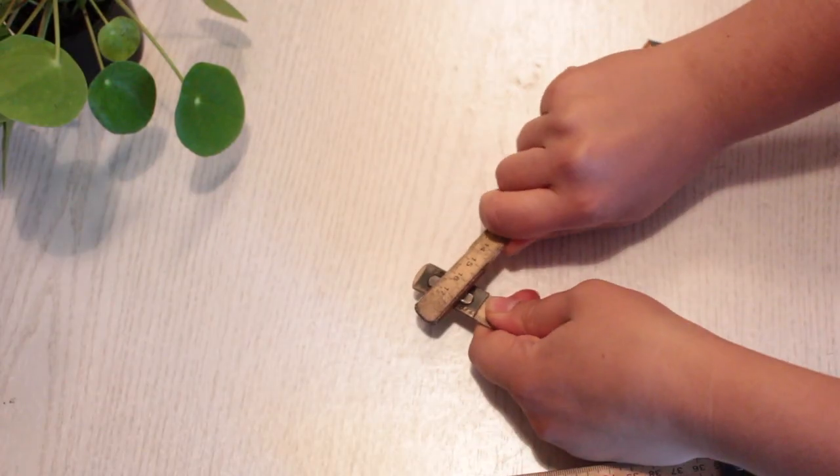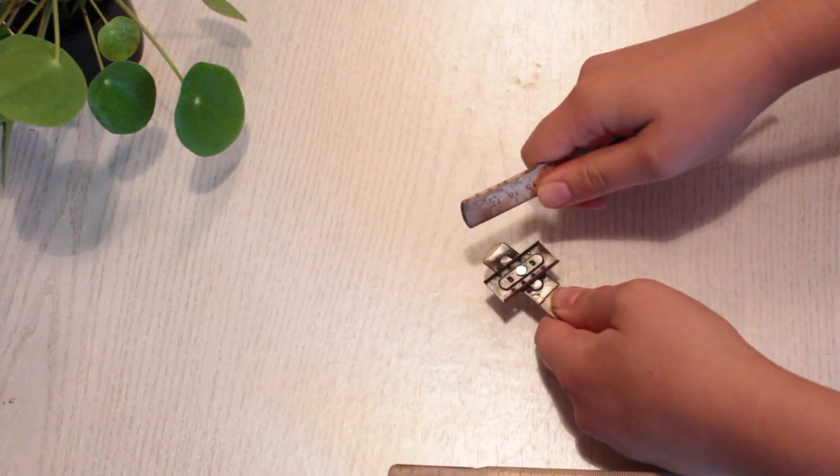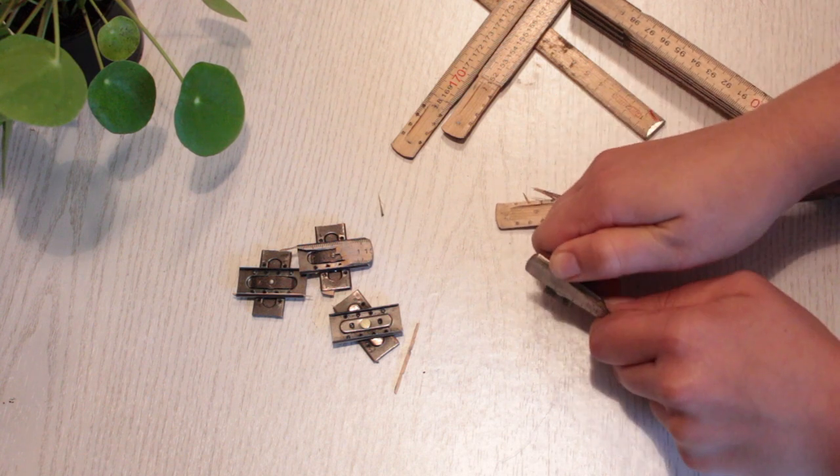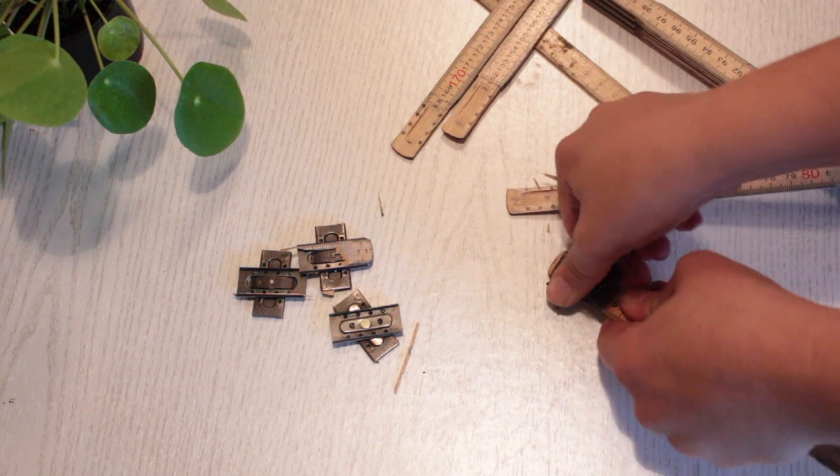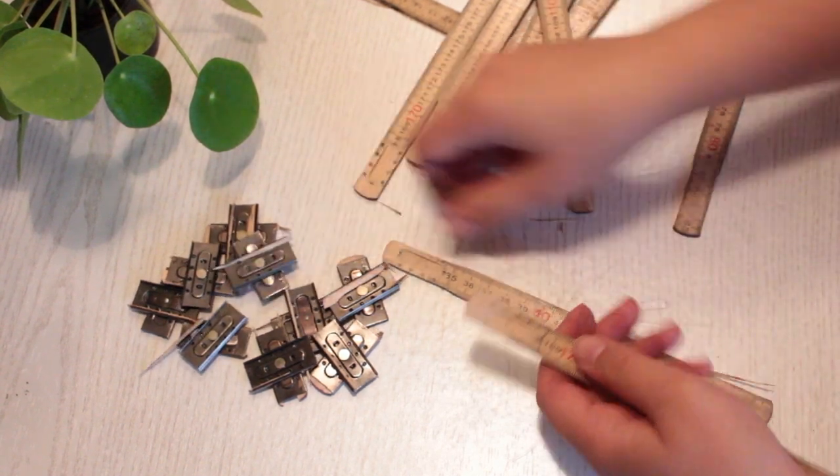Then take each individual stick and pull it apart from the hinges. You can use some pliers to separate the hinges because it can get a little difficult, but continue this process of removing hinges until you're only left with the sticks.